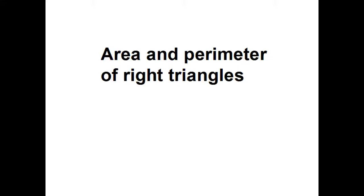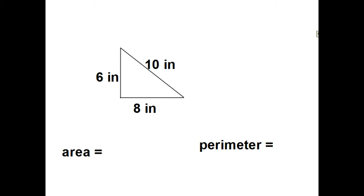This video is going to help you with finding the area and perimeter of right triangles. So on this picture you can see we have a right triangle right here is where the 90 degree angle would be.